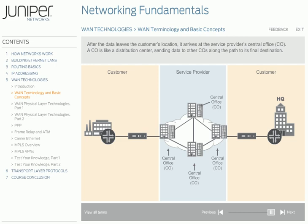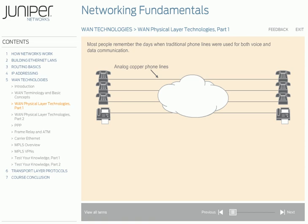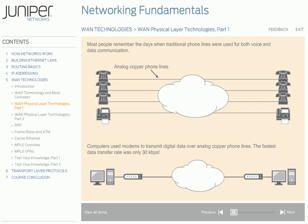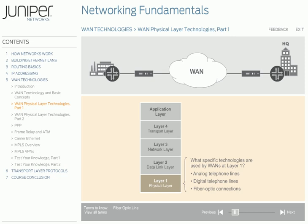Now that you know some of the terminology and concepts of WAN technology, let's take a look at the specific technologies used by WANs at Layer 1, the physical layer. Most people remember the days when traditional phone lines were used for both voice and data communication. In the old days, computers used modems to transmit digital data over these analog copper phone lines, and the fastest data transfer rate was only 30 kilobits per second. In this section, we're going to learn how WANs first went from using analog to digital phone lines, and then ultimately to fiber-optic connections, providing ever-increasing bandwidth at the physical layer. You've probably heard the terms T1 and T3, or E1 and E3, in connection with WANs. Perhaps you have also heard of SONET or SDH.